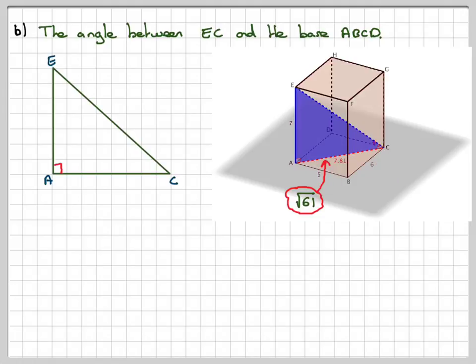So, drawing out this triangle, ACE. Marking on the distances. This is square root of 61. This is 7 centimeters. And the angle that we want to find is this one here. So, it corresponds to that angle there because that's the angle that the line EC makes with the base of the rectangular box. Right, so let the required angle be called theta. This is opposite because it's opposite the angle. This is next to the angle, adjacent. And this is the hypotenuse.